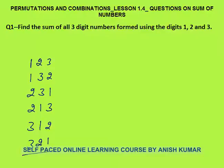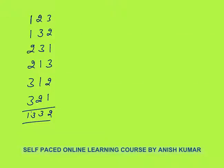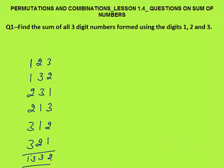If you sum all these numbers this comes out to be 1332. Now this is the manual way, but we can't find the sum of all the numbers by the manual way every time.